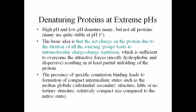What are the different things that can unfold a protein, that can make a protein unstable? The first thing is extreme pH. Extreme pH can make a protein unfold because the net charge of the protein, due to the titration of all the ionizing groups, leads to intramolecular charge-charge repulsion.